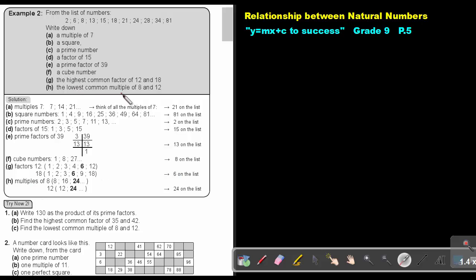The last one: the lowest common multiple of 8 and 12. Write down the multiples of 8, write down the multiples of 12, find the lowest common one. That will be 24.